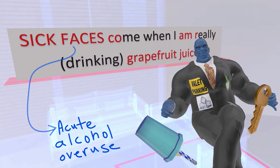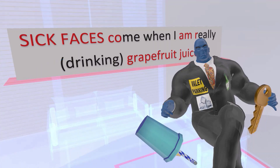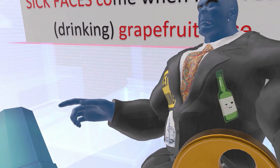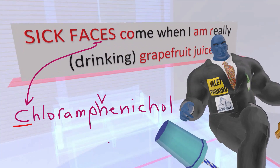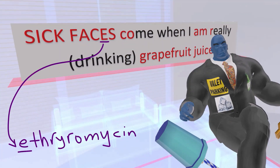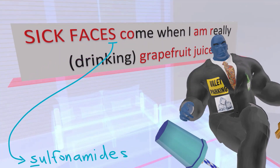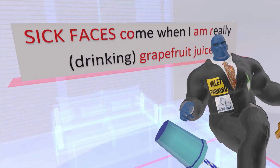A is for acute alcohol overuse — he has a picture of a really cute alcohol bottle on his jacket, 'cute' for acute alcohol. C is for chloramphenicol. E is for erythromycin and clarithromycin. S is for sulfonamides.